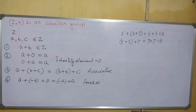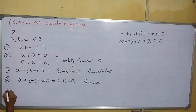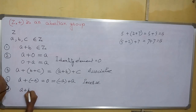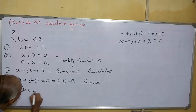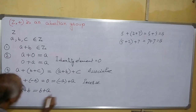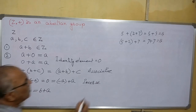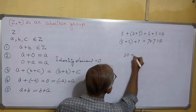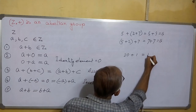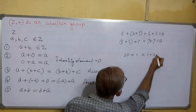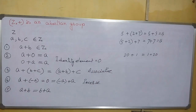Now, the last point — to prove it is an Abelian group, we have to show that it is commutative. That is, for any two elements A and B in the set of integers, A plus B equals B plus A. For example, 20 plus 1 equals 21, and 1 plus 20 is also 21. Hence, addition of integers is commutative.